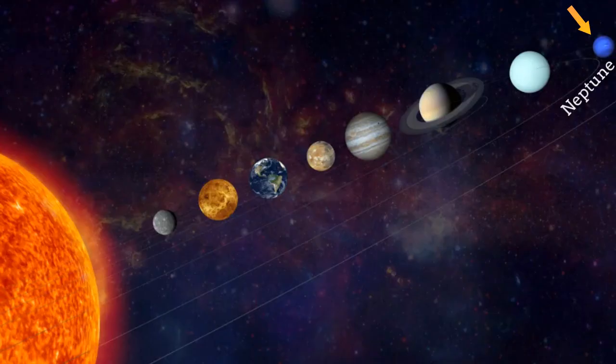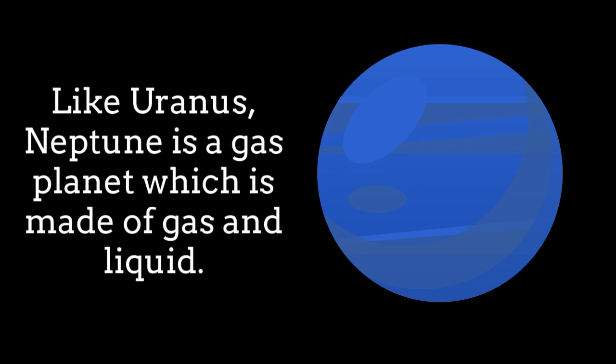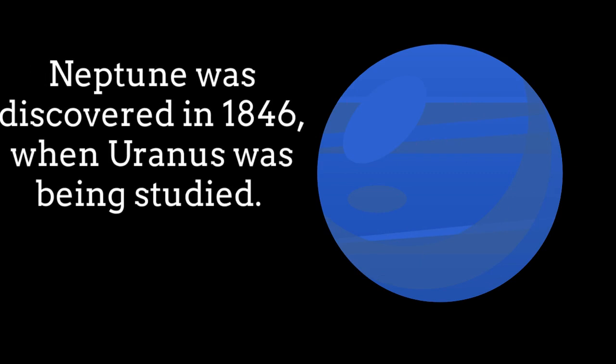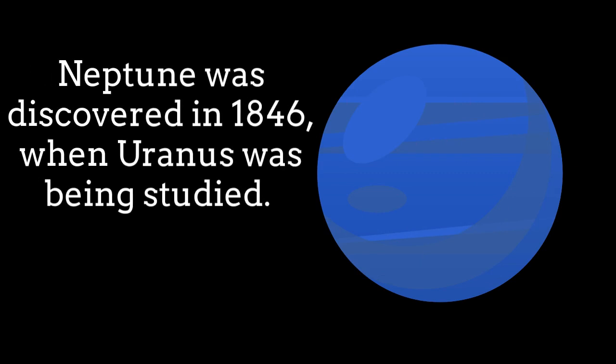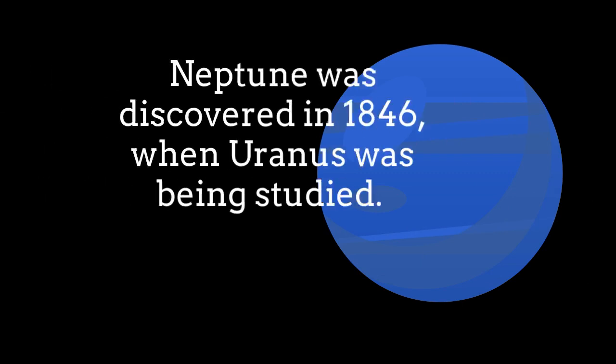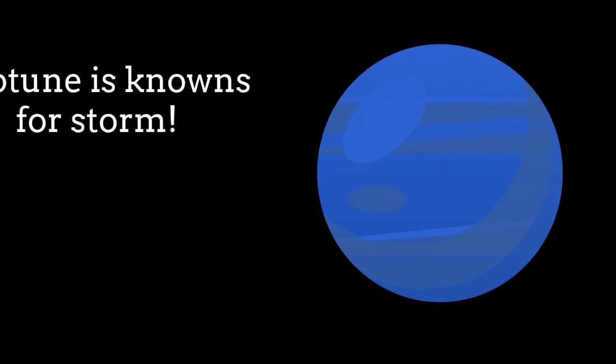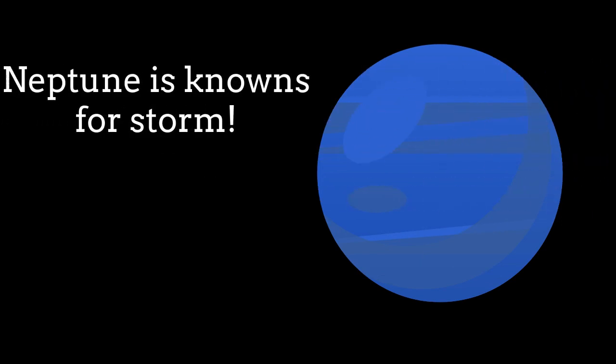Like Uranus, Neptune is a gas planet which is made of gas and liquid. Neptune was discovered in 1846, when Uranus was being studied. It is known for storms, worst storms in the solar system.